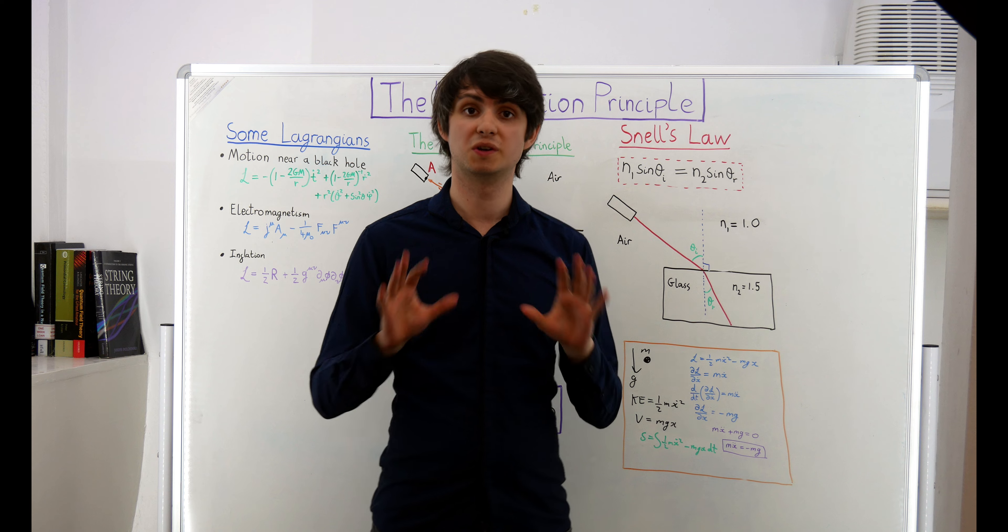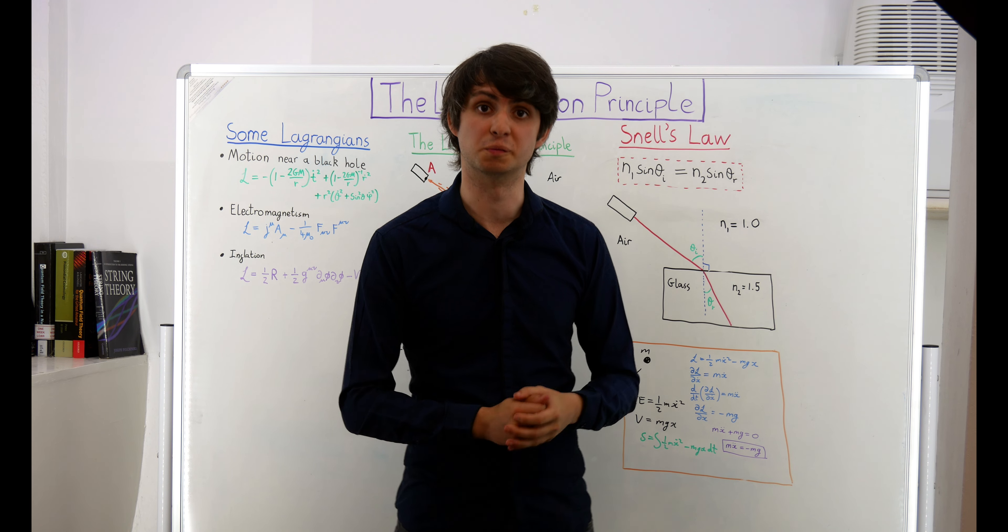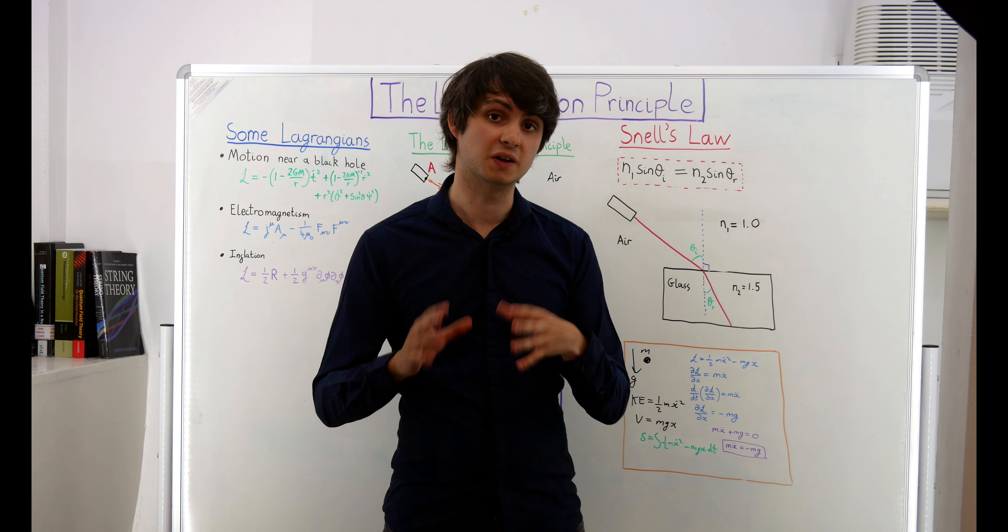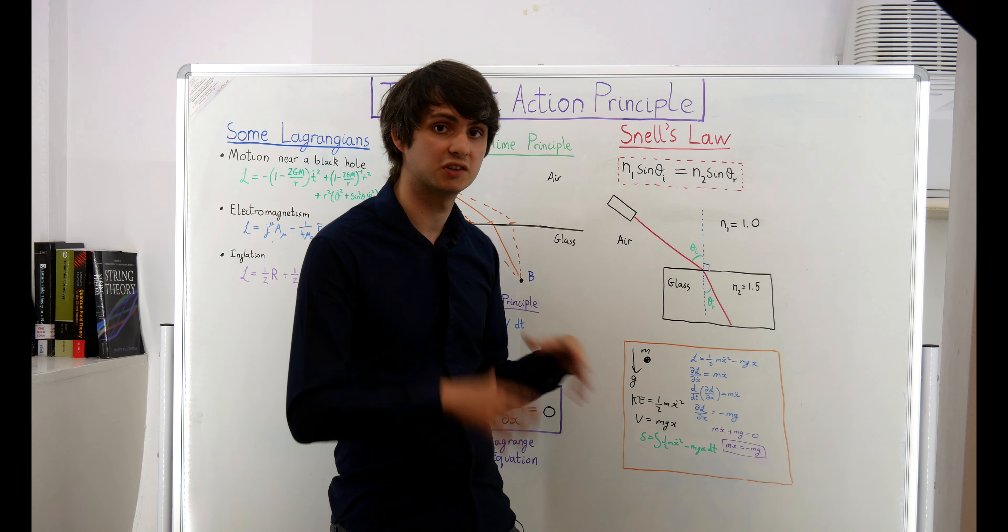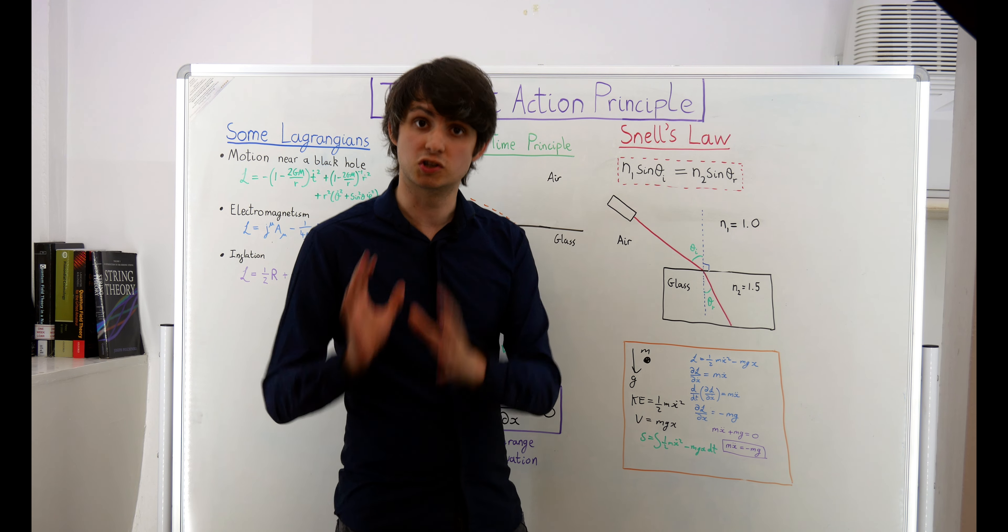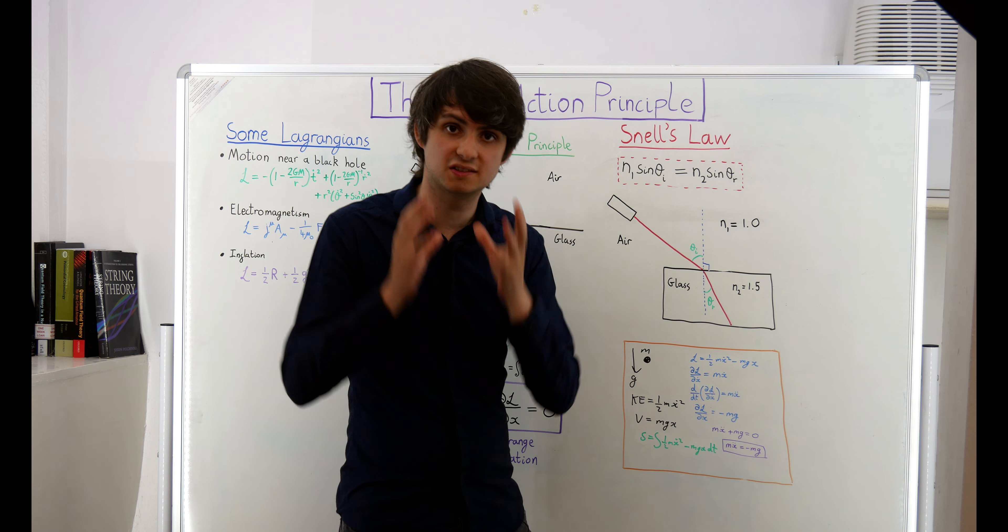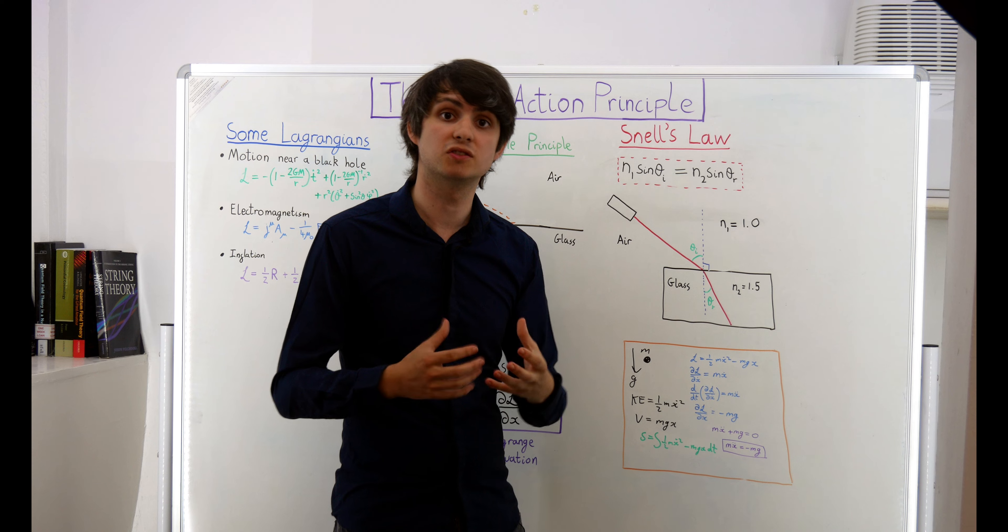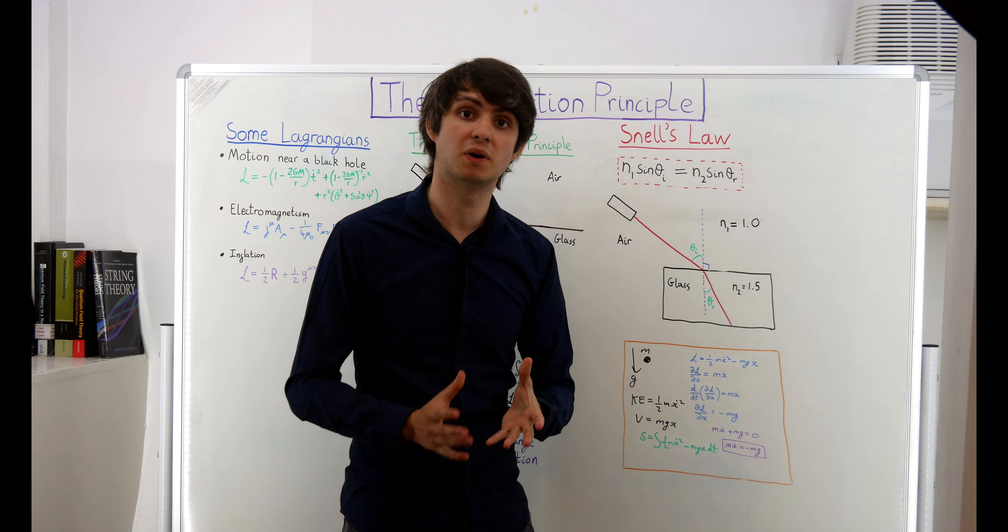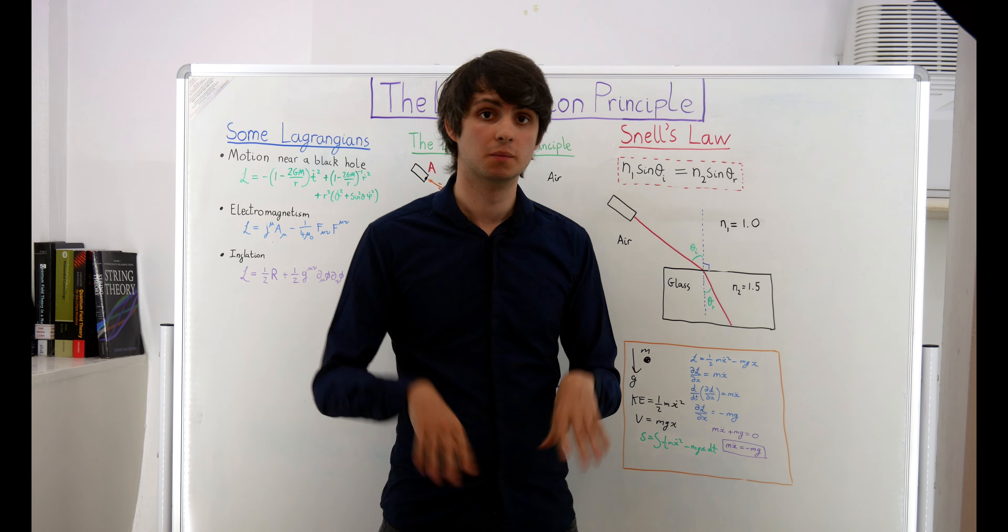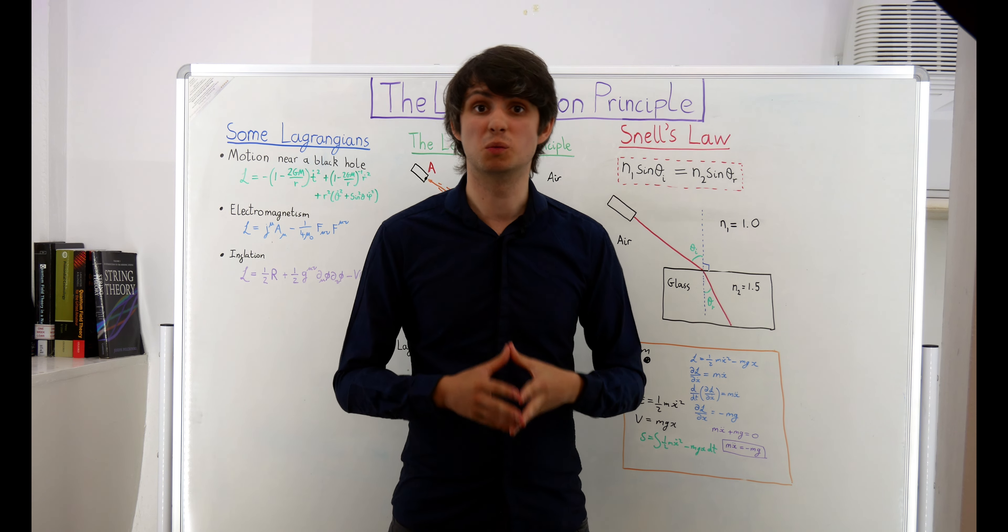At this point, we should pause and think about what this all means. We started out by talking about how light is refracted by a change in medium. We showed that the law of refraction could be derived from a single principle, that light always travels along the quickest path between two points. But this is a principle that only works for light.